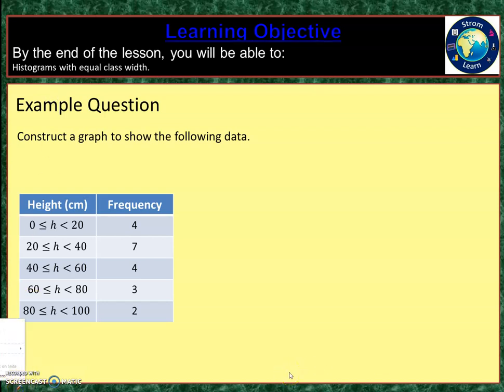We're going to construct a graph to show the following data. We've got some heights and we've got some frequencies. This is a bit of an oddity when it comes to most histogram questions, because each of the groups for heights is the same width — each has got a 20 centimeter width.